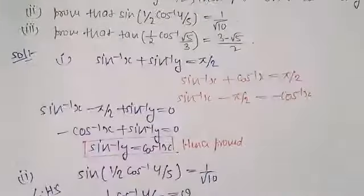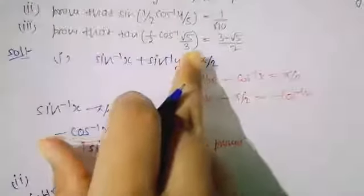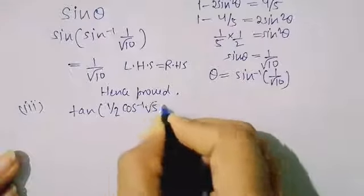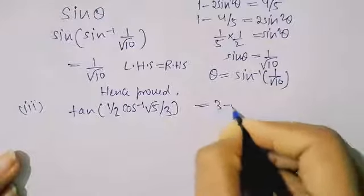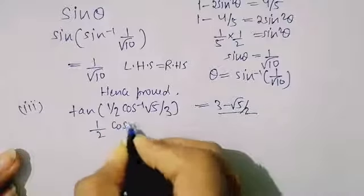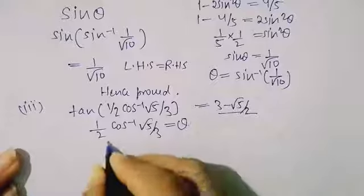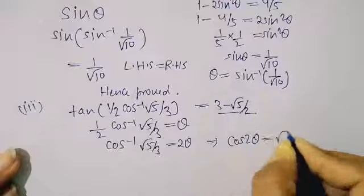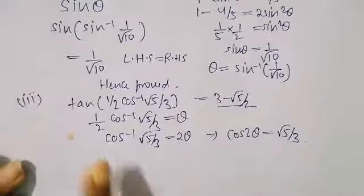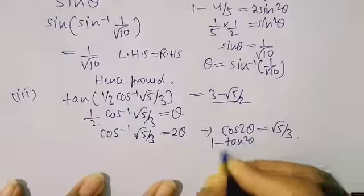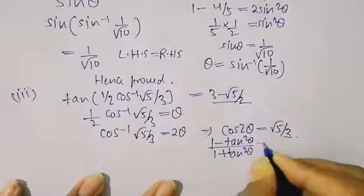For Part 3, we need to prove that tan(½ cos⁻¹(√5/3)) = (3 − √5)/2. Let ½ cos⁻¹(√5/3) = θ, so cos⁻¹(√5/3) = 2θ, meaning cos 2θ = √5/3. Since it involves tan, I use the identity cos θ = (1 − tan²θ)/(1 + tan²θ) = √5/3.